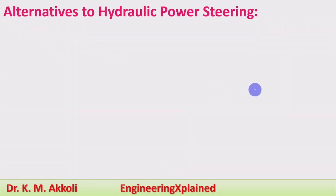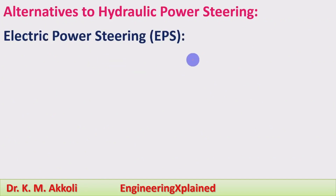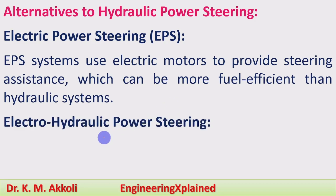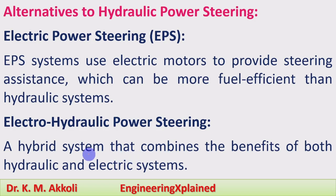Alternatives to hydraulic power steering include Electric Power Steering (EPS), which uses electric motors to provide steering assistance and is more fuel efficient than hydraulic systems, as it runs on battery power generated by the vehicle's induction system. Electro-hydraulic power steering is a hybrid system that combines the benefits of both hydraulic and electric systems, and can be more efficient than either alone. These systems will be discussed in future sessions.